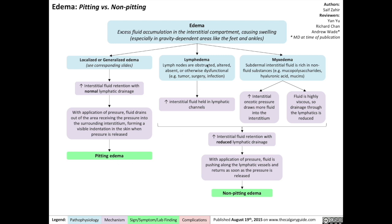That is what results in Pitting Edema. In contrast, lymphedema and mixed edema result in Non-Pitting Edema. Lymphedema occurs when lymph nodes are obstructed, altered, or absent, or otherwise dysfunctional due to tumor, surgery, or infection. That results in increased interstitial fluid held in lymphatic channels, preventing lymphatic drainage from the affected area of the body.